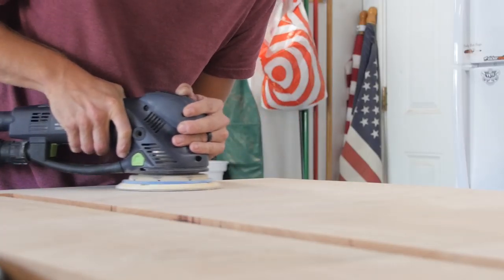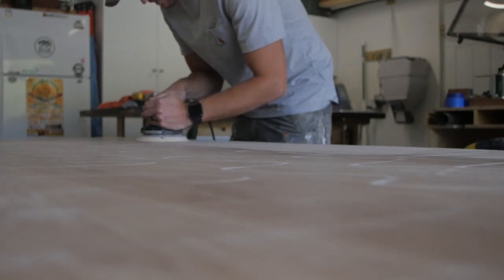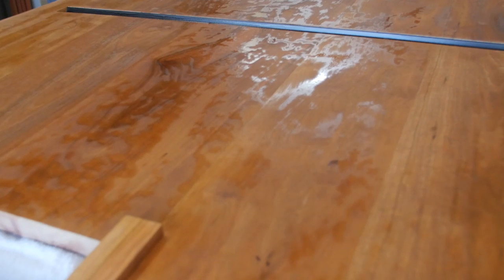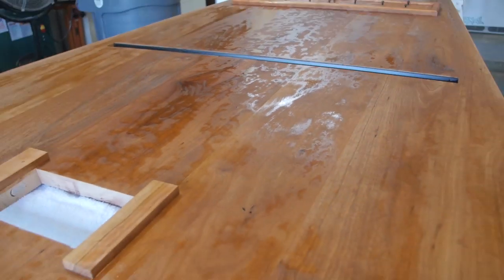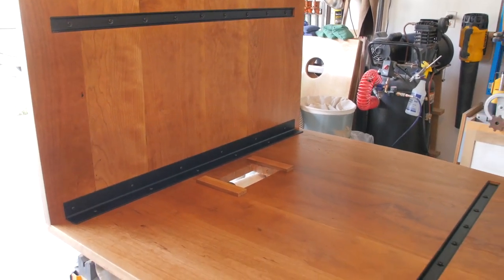And then I spent a lot of time finish sanding everything to make it really smooth. And before we added the finish, I added our brand to the underside of the tabletop. For some reason, this is about the only shot I have of the finish being added to the tabletop, which means I either lost footage or I forgot to record. Either way, it happens.